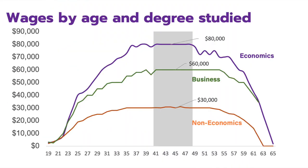Let's look at the median wage by age and degree type. We have a graph for three different samples: non-economics majors, business majors, and economics majors. Income starts low early in your career and increases across all samples, but economics has the highest increase. For most, the prime income-earning years are between 41 and 49 years old. For economists, that peak is roughly $80,000. For business majors, it's $60,000. For non-econ majors, it's $30,000 — though that group also includes people who didn't go to college, which is why it's lower.